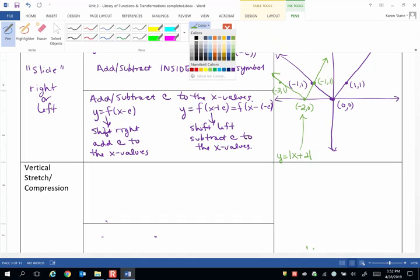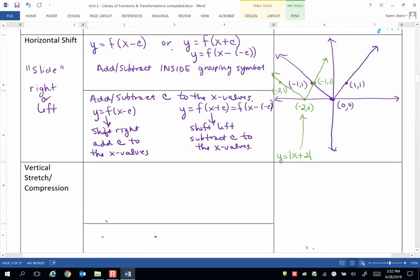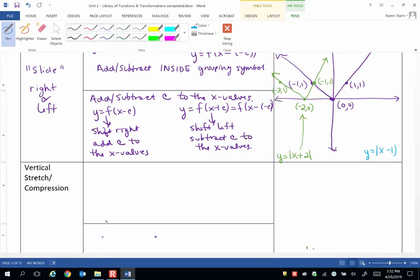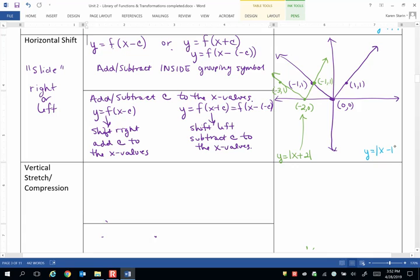I'm going to change colors again. Now I want to graph y equals the absolute value of x minus 1. Let me straighten up that absolute value symbol because it kind of looks like a parenthesis. So, this is of the form y equals f of x minus c.